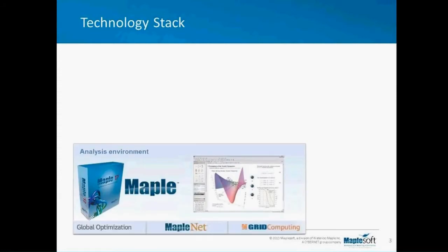I'd like to spend a couple of minutes introducing you to our technology stack. Our core product, on which all of our other tools are built, is Maple — a tool for doing numeric and symbolic math on a computer, with a rich design heritage of well over 25 years of continual development. Around Maple, we've built an ecosystem of other tools: tools for global optimization, deploying Maple documents to the web, and grid computing.